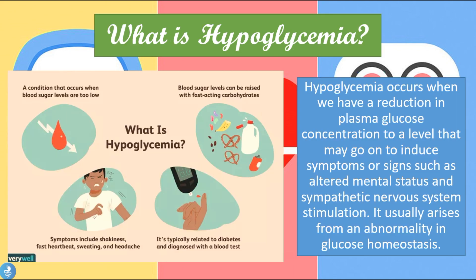So what is hypoglycemia? Hypoglycemia occurs when we have a reduction in the plasma glucose concentration to a level that may go on to induce symptoms or signs such as an altered mental status and sympathetic nervous system stimulation. It usually arises from an abnormality in glucose homeostasis.